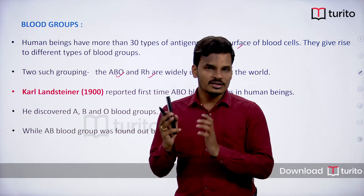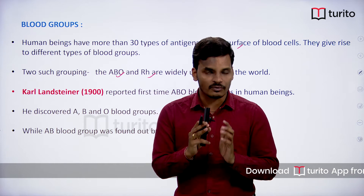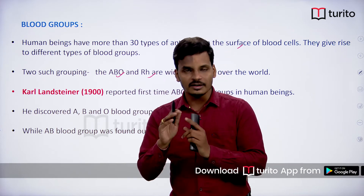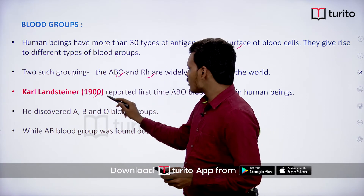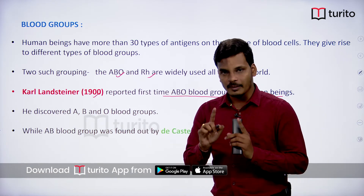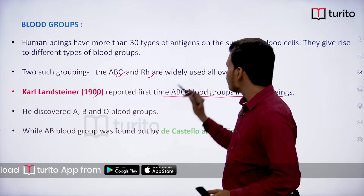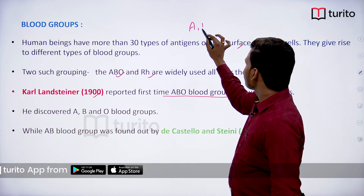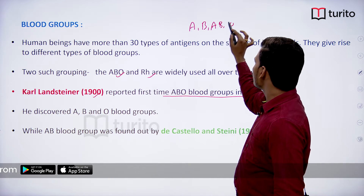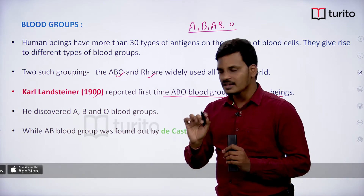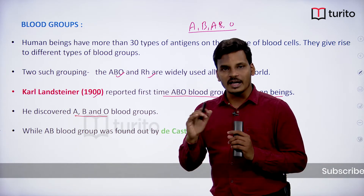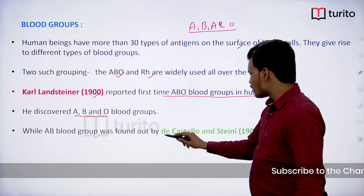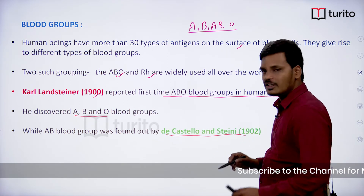If you see the historical aspects, the ABO blood group system was first identified by Karl Landsteiner. When we say the ABO blood group system, it includes A, B, AB, and O — four blood groups. Landsteiner had identified only three: A, B, and O. The AB blood group was identified by De Castello and Steny.